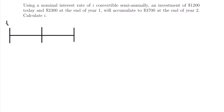Let's label the timeline. Time equals zero is today, where we have the investment of $1,200. Time equals one is one year in the future, where we add $2,300. And time equals two is two years in the future, where we accumulate to $3,700, which is our future value.